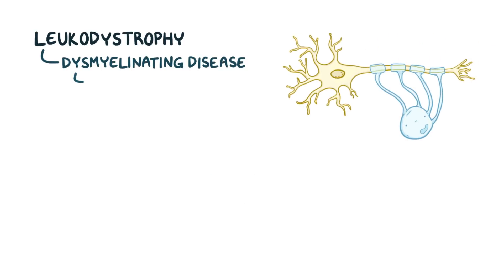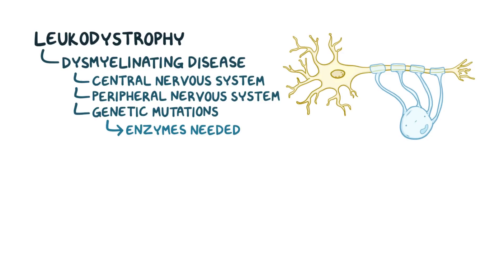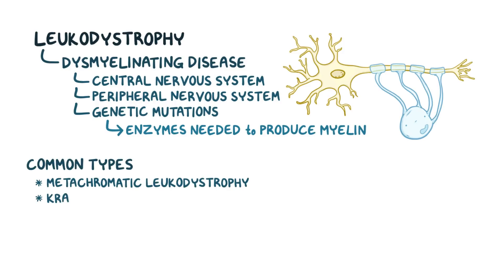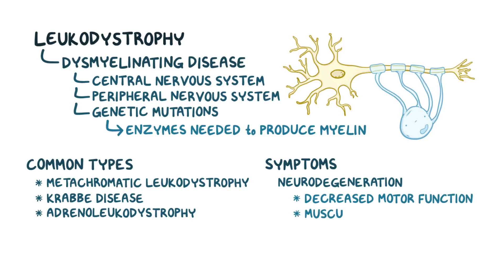As a quick recap: leukodystrophy is a dysmyelinating disease of the central and peripheral nervous systems, caused by genetic mutations in enzymes necessary for myelin production. The most common types are metachromatic leukodystrophy, Krabbe disease, and adrenoleukodystrophy. Symptoms are due to neurodegeneration, like decreased motor function, muscle rigidity, and later on, blindness and hearing loss.